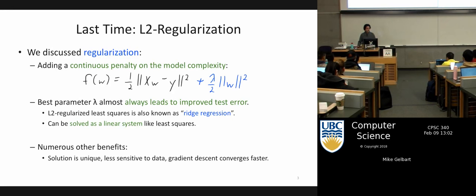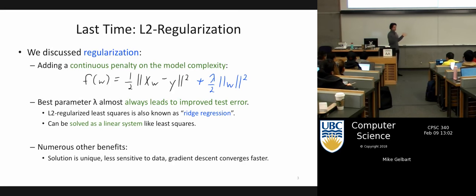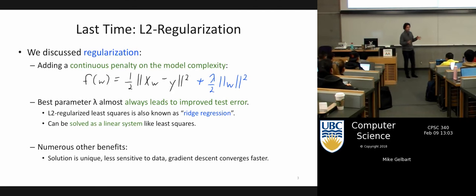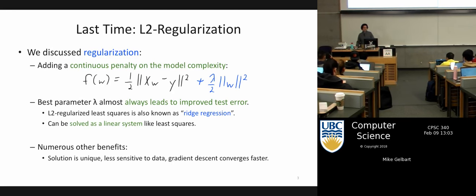Lambda is this coefficient that measures the strength of regularization. If I set lambda to zero, the regularization goes away. If I set lambda towards infinity, it pushes all the weights to zero and you begin to ignore the data. Linear regression with L2 regularization is called ridge regression — if you've heard that term, it's just a word for this.